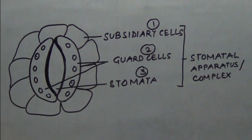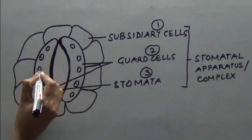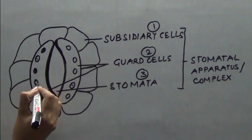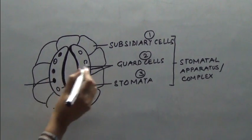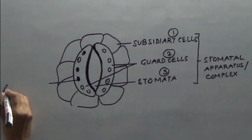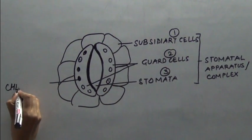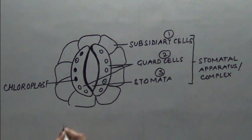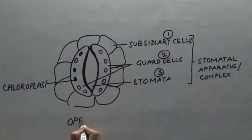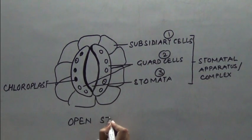Besides, one more labeling that you need to know is that these cells which I told you are the chloroplasts. You have to label it because these are guard cells, the only epidermal cells which have chloroplasts. So this forms your structure of open stoma.